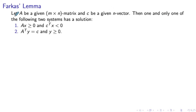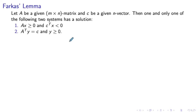So first let's state the Farkas lemma. We have a matrix A of size M times N, and a vector C of length N. The Farkas lemma states that one and only one of the following two systems has a solution. The first system is Ax ≥ 0 and C transposed x < 0, and the second system is A transposed y = C and y ≥ 0. Farkas lemma is an example of what we call theorems of alternatives in optimization, where we have two statements, exactly one of which holds and the other doesn't.